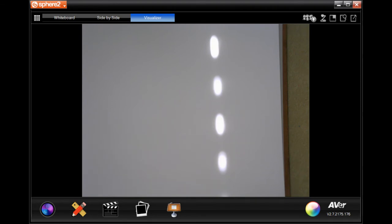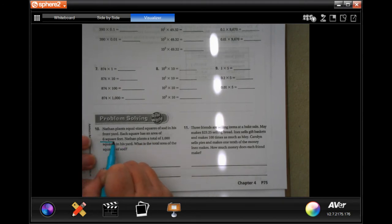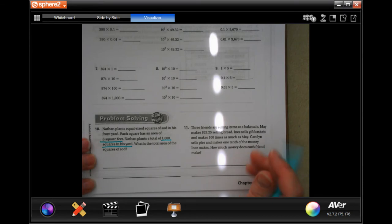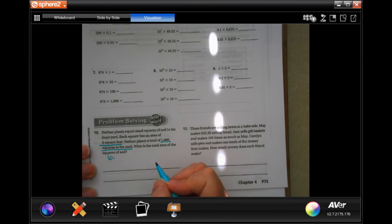So on number 10, it says Nathan plants equal size squares of sod in his front yard. Each square has an area of six square feet. Nathan plants a total of 1,000 squares in his yard. What is the total area of the sod? So then that means currently you have six, where the decimal would be right there. Now, you're multiplying that by 1,000. So you would have one, two, three bumps because one, two, three zeros. One, two, three. So now you have 6,000 square feet.